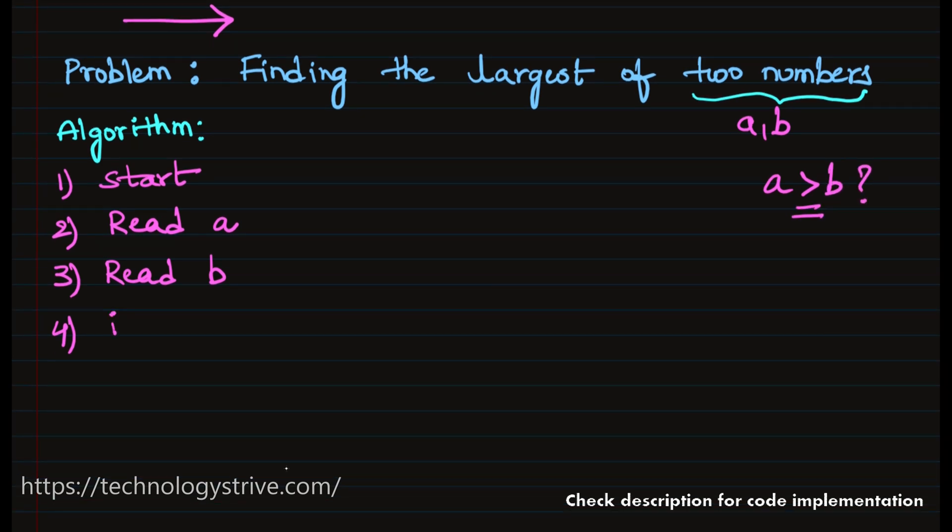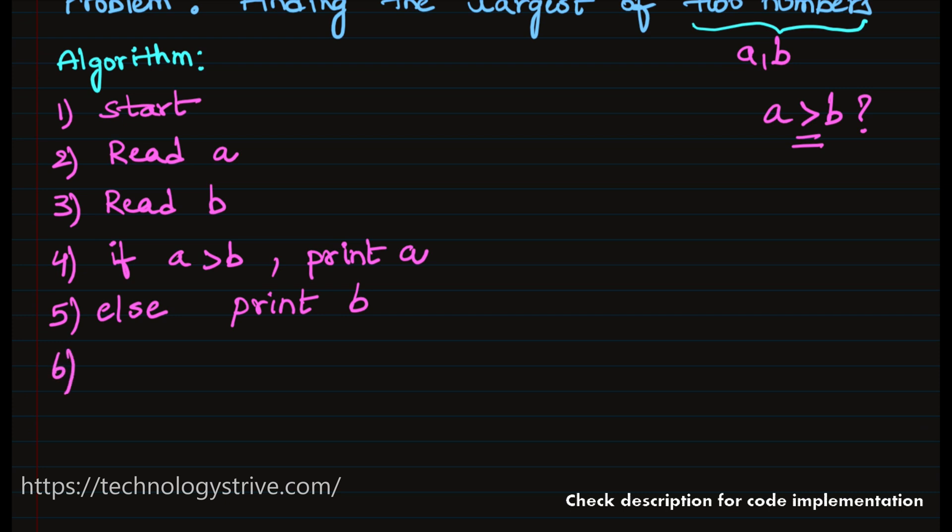If a greater than b, we found the answer which is a. If this is not the case, meaning else, then obviously b is the answer. So we have to print b. Given two numbers, we have to print the largest of two numbers. Means we found it - either a or b is the largest among the two. So we have to end our algorithm using stop.